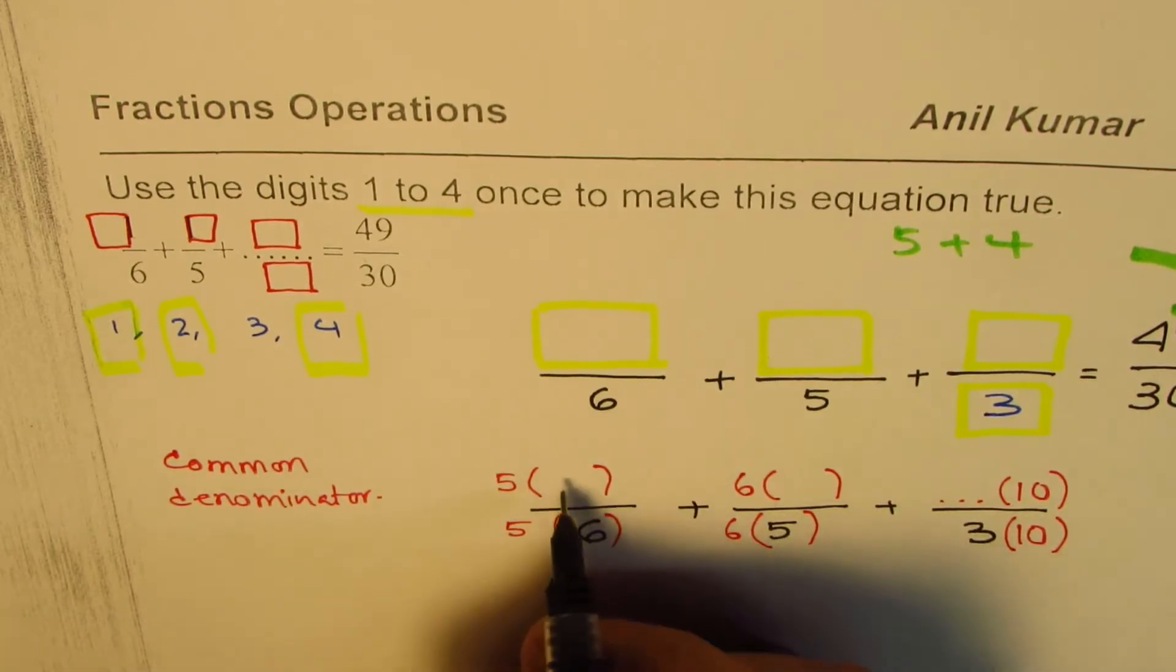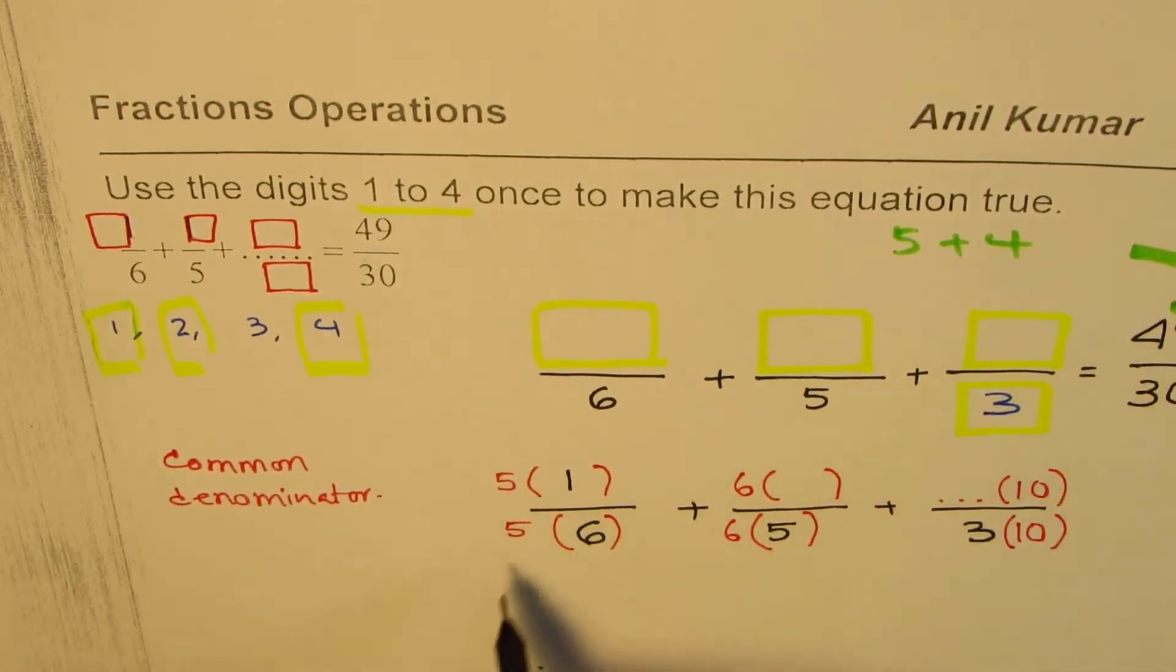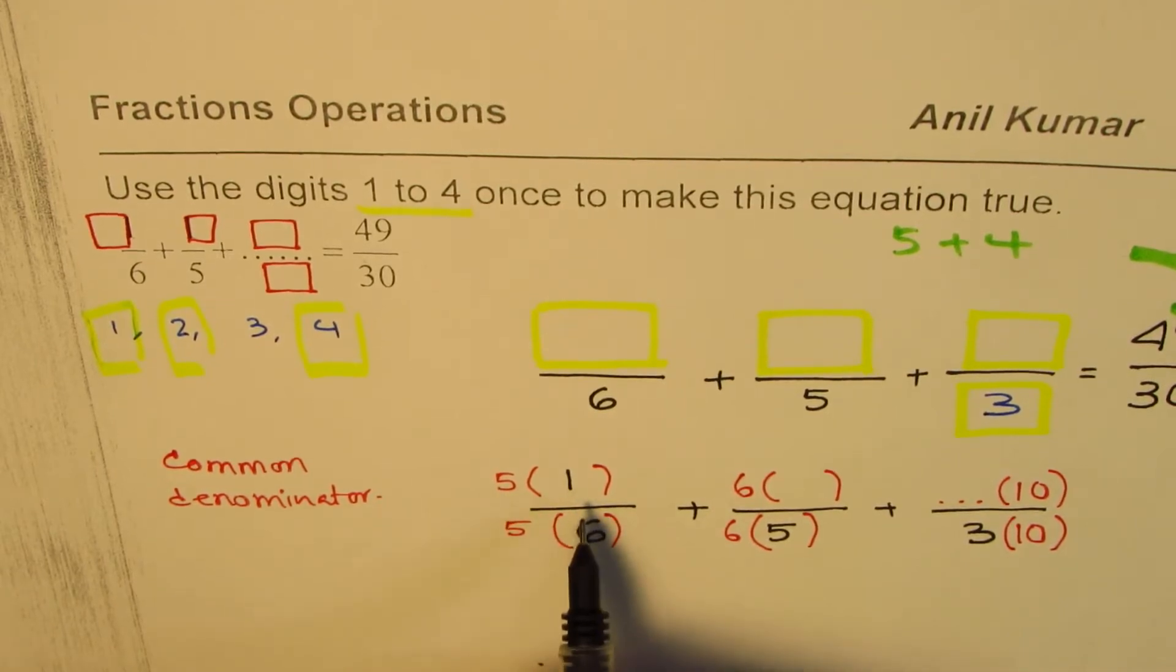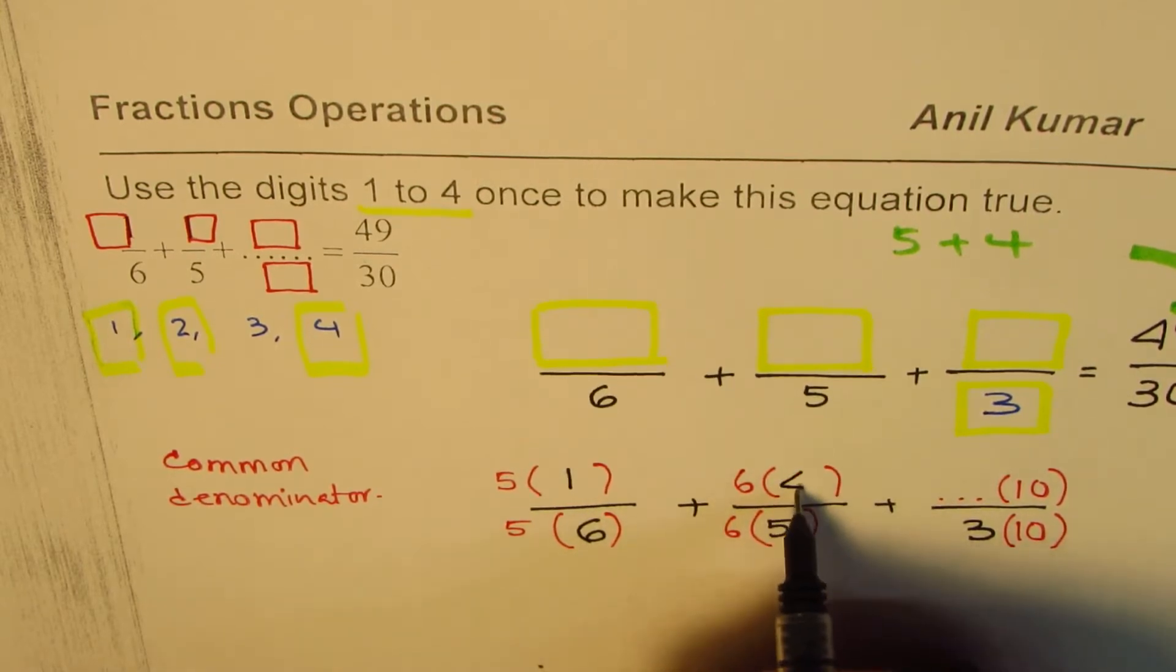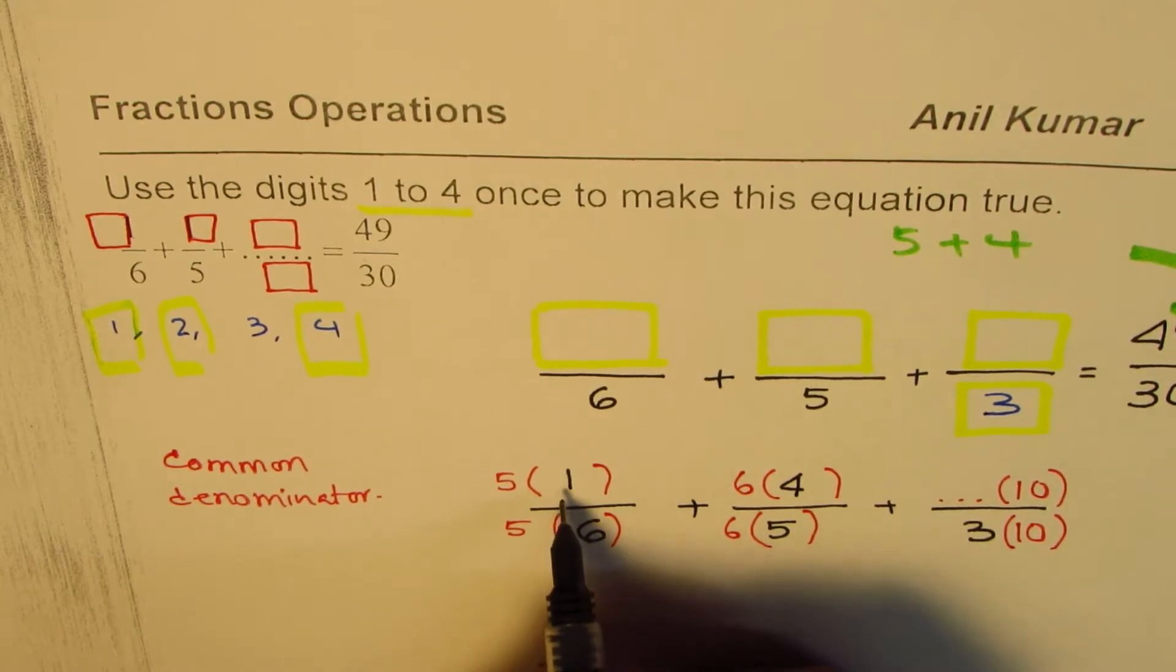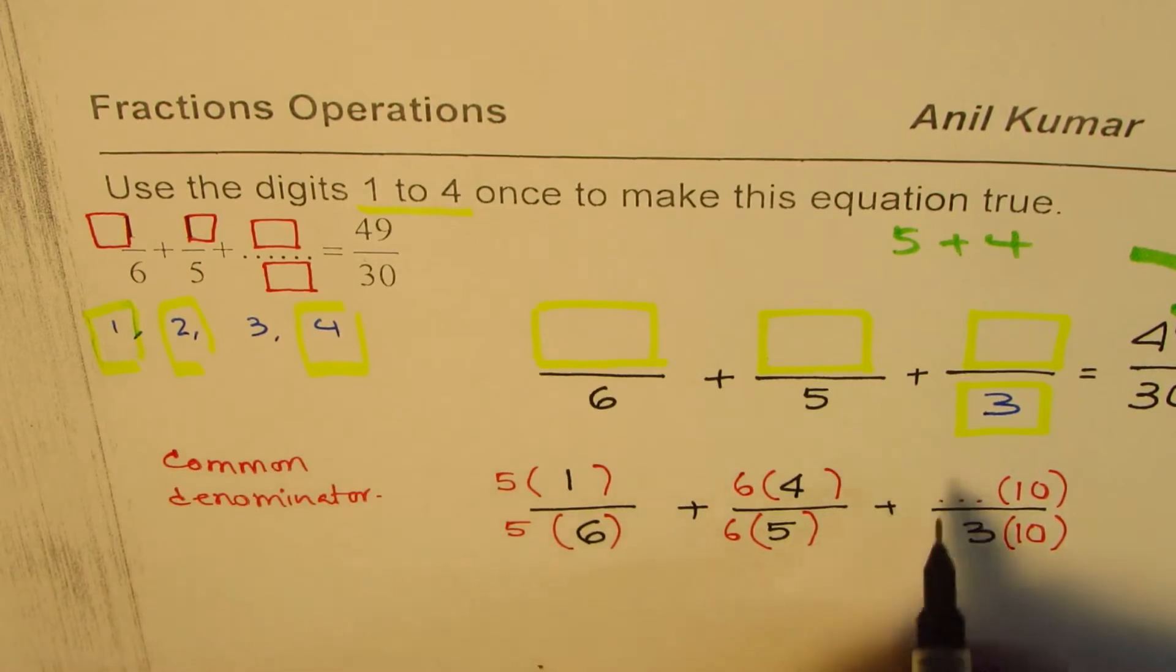With this combination you could get 5 plus 4 is 9. 5 plus 4 is 9. That's the ones place. So what we can do here is we can place 1 here so we get 5 in units place. And then how do we get 4? 6 times 4 is 24. So 4 plus 5 is 9.